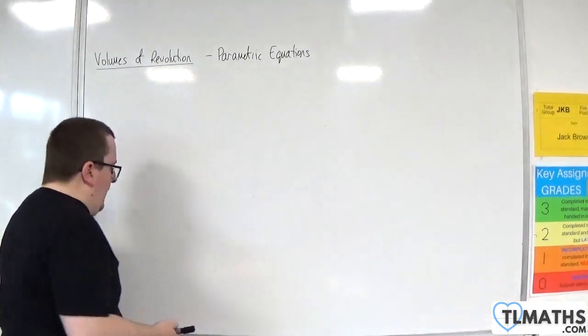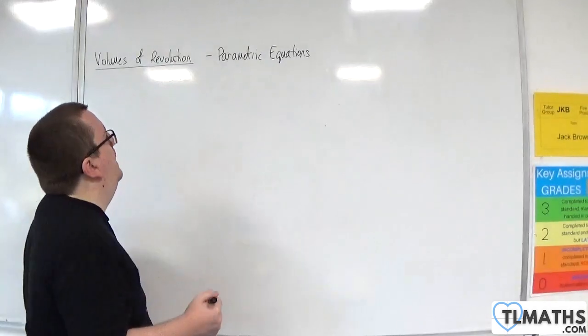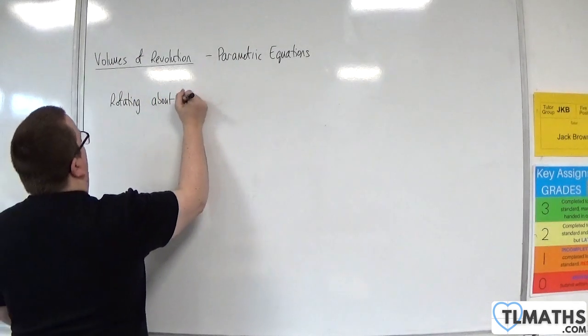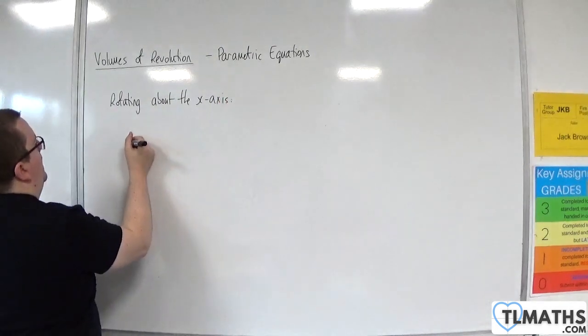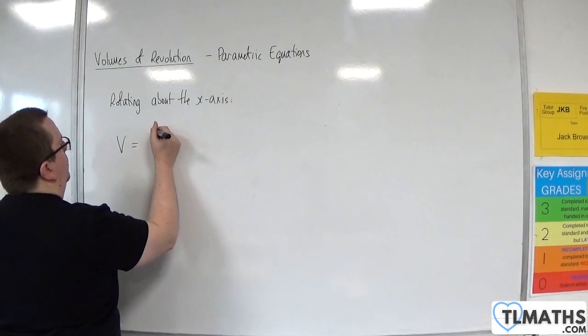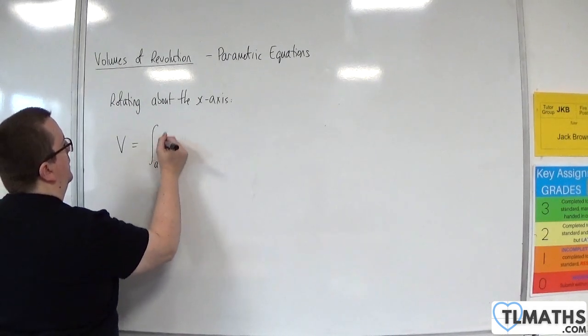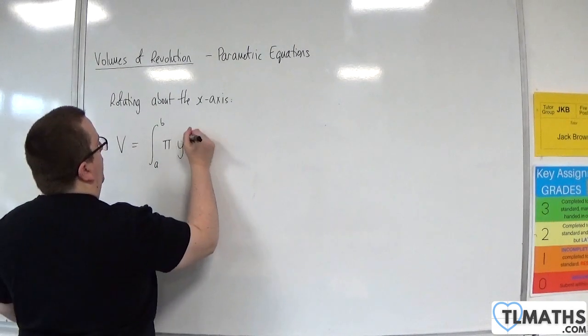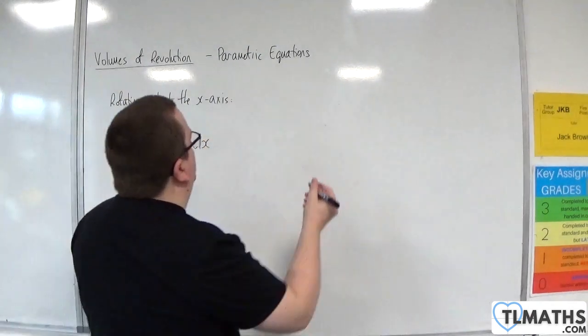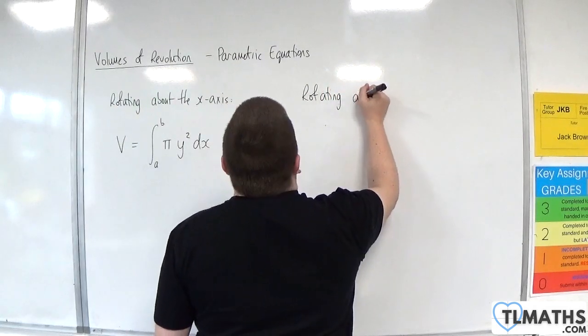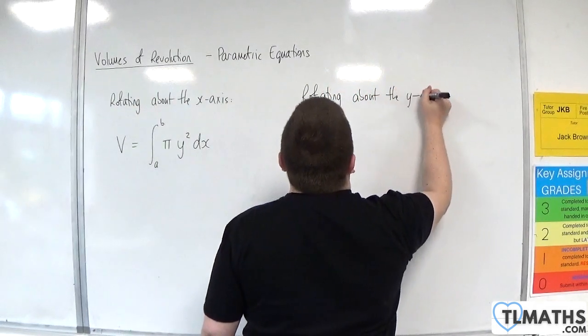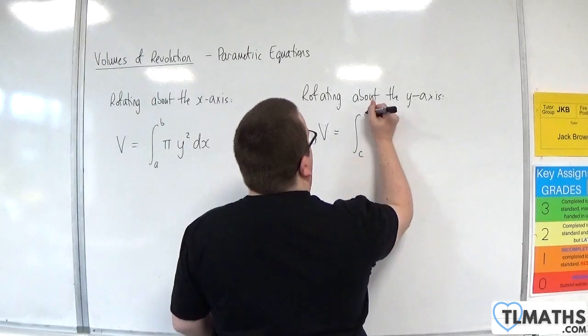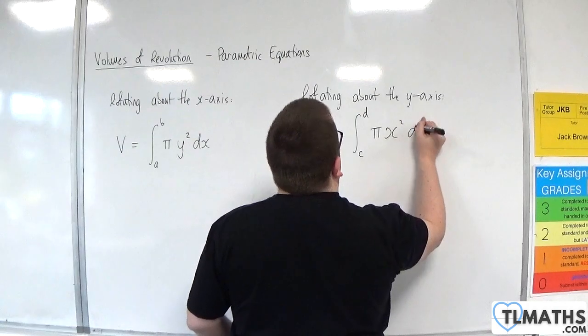But of course, with Volumes of Revolution as we've worked so far, if you are rotating about the x-axis, then the volume is going to be equal to the integral between your two limits, so let's say A and B, so x equals A and x equals B, of pi y squared dx. And if we are rotating about the y-axis, then our volume is the integral between y equals C to D of pi x squared dy.